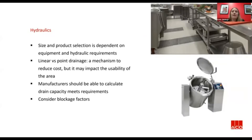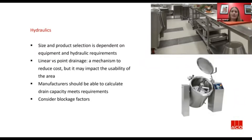During design, and then possibly again later on during construction of the D&C project, substituting linear drainage for point drainage is often used as a mechanism to reduce cost. But making the decision to remove a linear channel from in front of a piece of equipment like this and substituting for a point drain can have a massive impact on the functionality of the kitchen area. So any substitution should be considered carefully, and if there's a kitchen consultant, chat to them about what that impact could be.